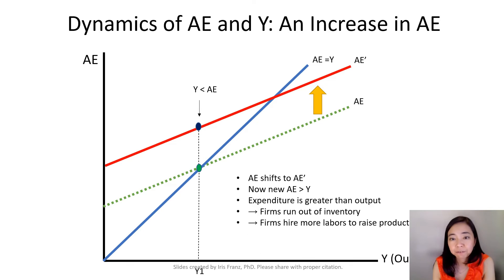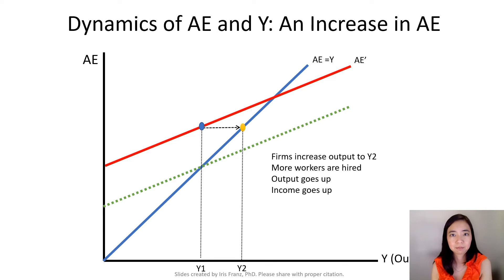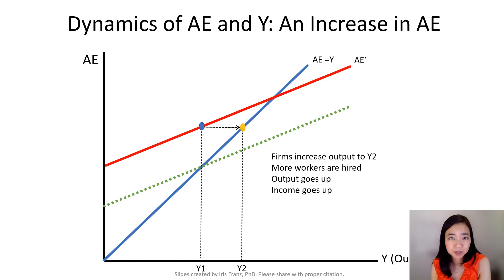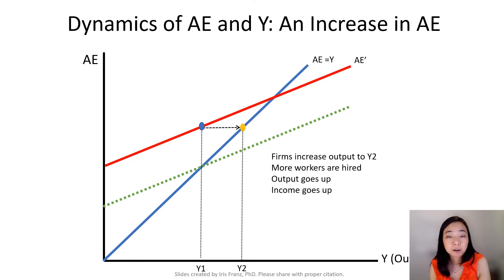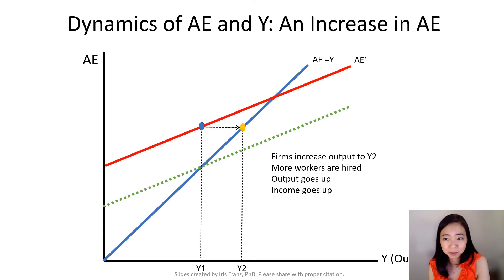Therefore, firms will try to hire more workers to produce more. After firms increase their production, output goes up from Y1 to Y2, and the firms are able to produce more because they also hire more workers. That means workers' income also goes up.